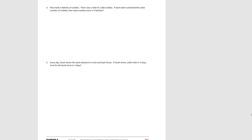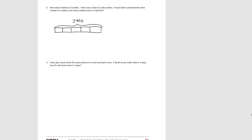Read number four, stop the video, figure out which type of problem it is, draw the correct tape diagram, and solve the problem. Rita baked five batches of cookies, with a total of 2,400 cookies. If each batch contains the same number of cookies, how many cookies were in a batch? We know how many groups there are — five batches — so we're looking for the size of the group.